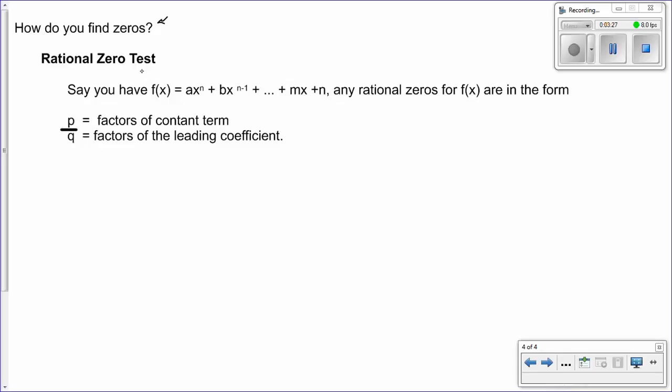You're going to use the rational zero test. Say you have f of x equals ax to the n plus bx to the n minus 1 plus a whole bunch of stuff plus mx plus n. Any rational zeros are in the form of p over q.